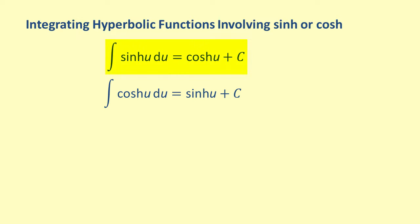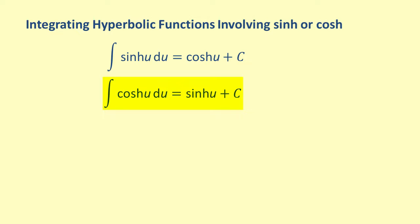So we have the integral of the hyperbolic sine of u du is equal to the hyperbolic cosine of u plus c, and the integral of the hyperbolic cosine of u du is equal to the hyperbolic sine of u plus c.